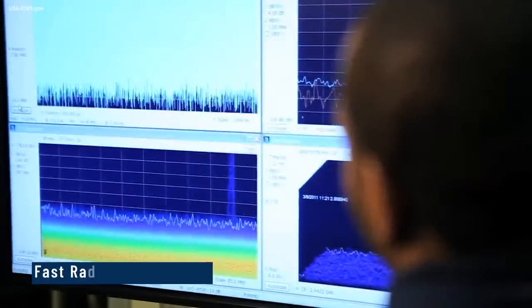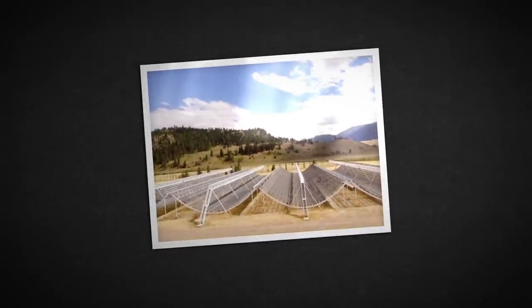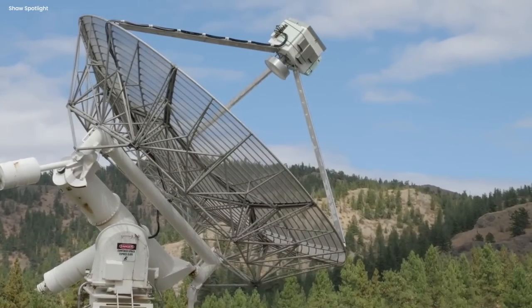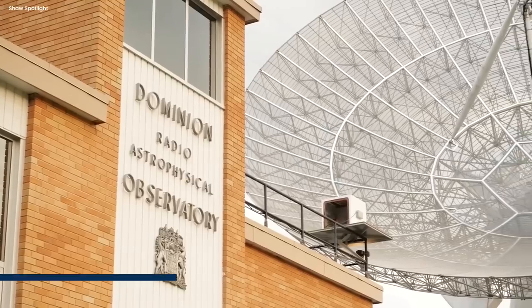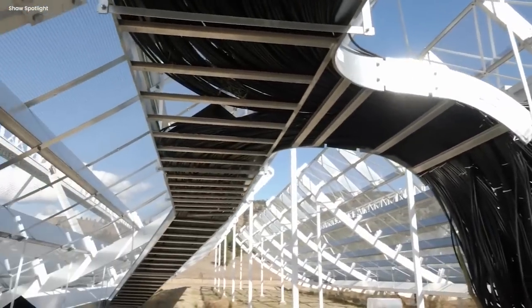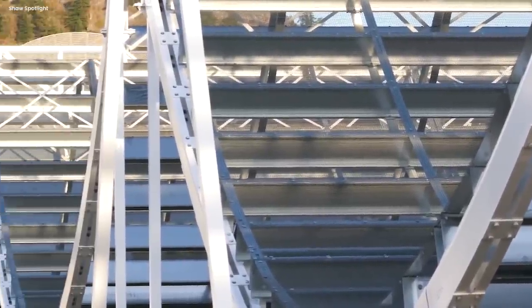The radio signals were fast radio burst signals first detected by the Canadian Hydrogen Intensity Mapping Experiment, also known as CHIME. CHIME is a radio telescope located at the Dominion Radio Astrophysical Observatory in British Columbia, Canada. It consists of four large cylindrical radio antennas, each measuring 20 meters by 100 meters.